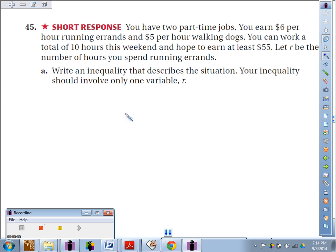Number 45, you have two part-time jobs. You earn $6 per hour running errands and $5 per hour walking dogs. You can work a total of 10 hours this weekend and hope to earn at least $55. Let R be the number of hours you spend running errands. Write an inequality that describes the situation. Your inequality should involve only one variable R.